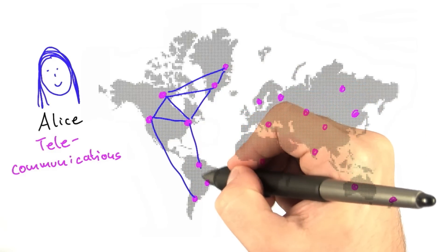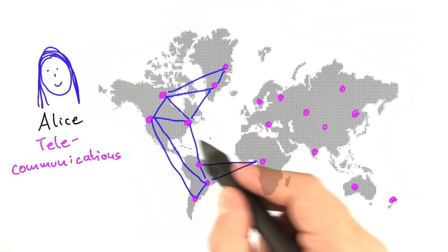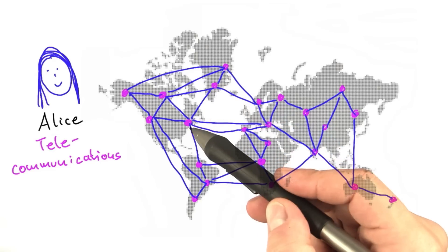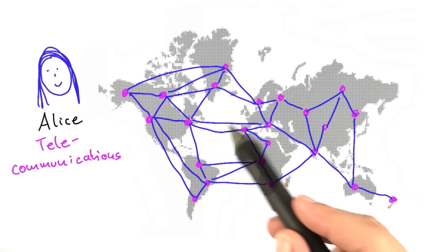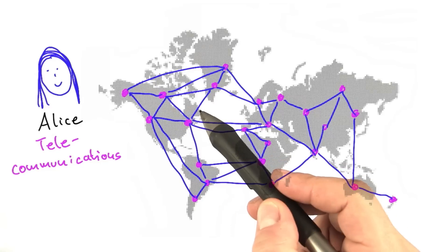Again, there are many more communication centers and cables here. But this is just to illustrate the problem that she's working on. Not every communication center is connected to every other communication center, but they're selectively connected through these blue cables here.